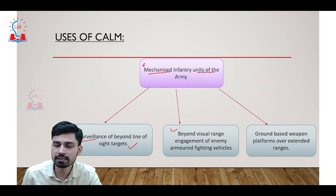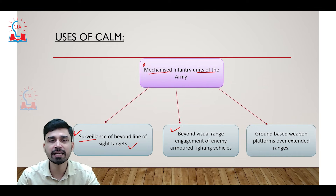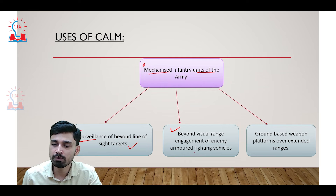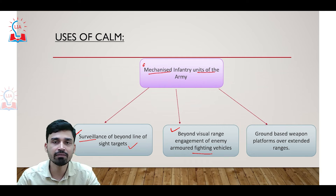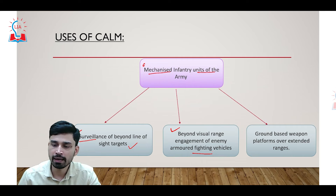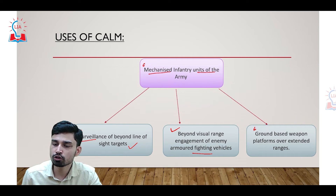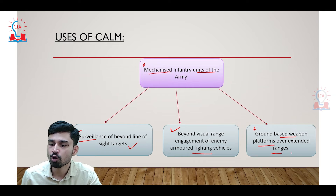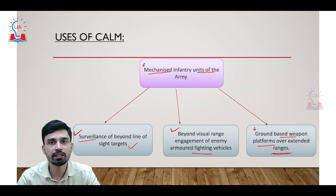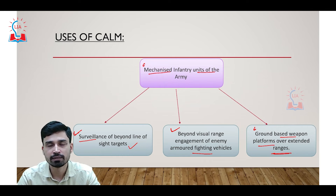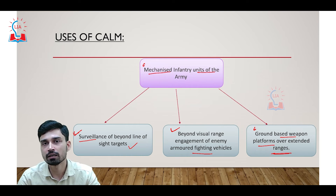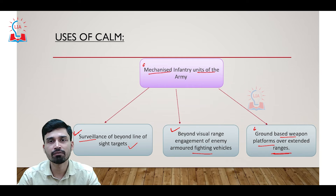Apart from surveillance, the CAM can also be used to engage beyond-visual-range enemy armored fighting vehicles to take them out. Third, it can also be used against ground-based weapon platforms over extended ranges. These are the three major advantages the CAM system will offer to the Indian military, providing an edge to neutralize adversary vehicles and tanks.